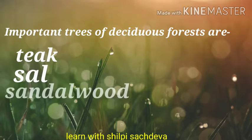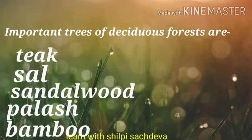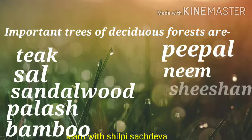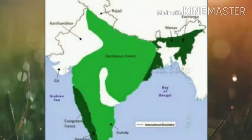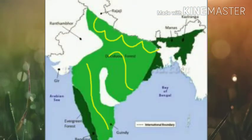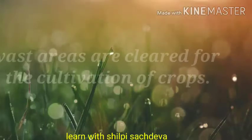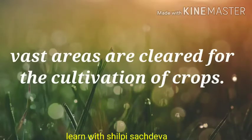The important trees of these forests are teak, sal, sandalwood, palash, bamboo, peepal, neem, shisham, mawa and semule, found in the wetter parts of the Deccan Plateau and the plains right up to the foothills of the Himalayas. Bamboo trees are also grown in these areas. Vast areas have been cleared to provide land for cultivation.